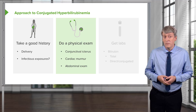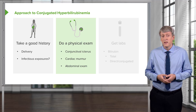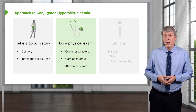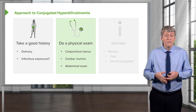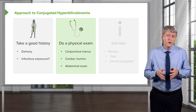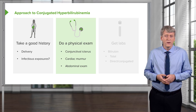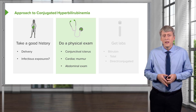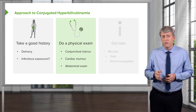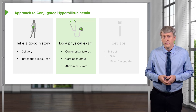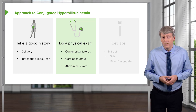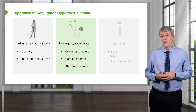Conjunctival icterus is common in these patients and may be how you find it. The best place to look for jaundice may be under the tongue around the frenulum area. If they have a cardiac condition — and there are some conditions like Alagille syndrome, which we'll talk about in a bit, that are associated with cardiac findings — listening for a cardiac murmur is important as well. The abdominal exam is of course critical, especially feeling for the liver edge or doing the scratch test, which may be an even better way to assess for hepatomegaly in children.